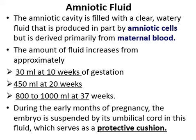Now we start the next topic: amniotic fluid. The amniotic cavity is filled with a clear watery fluid that is produced in part by amniotic cells, but primarily derived from maternal blood. The amount of fluid increases from approximately 30 ml at 10 weeks of gestation, to 450 ml at 20 weeks, and about 800 to 1000 ml at 37 weeks.